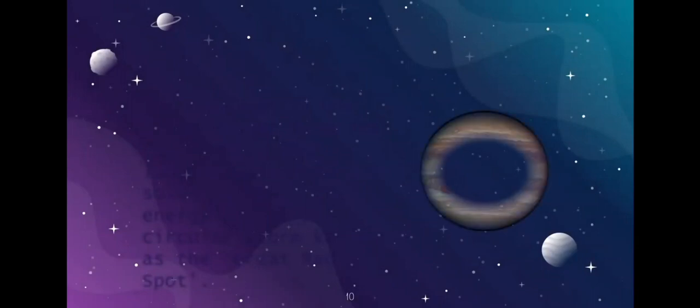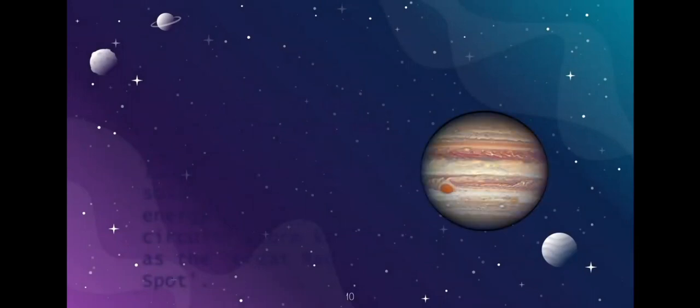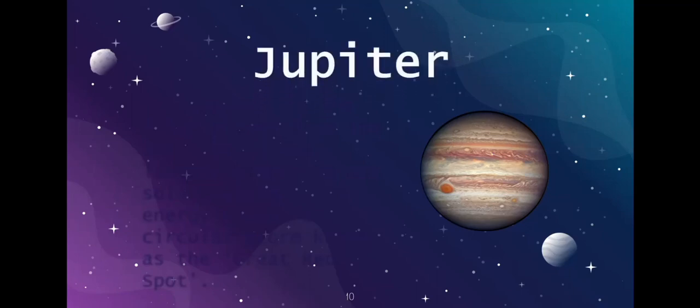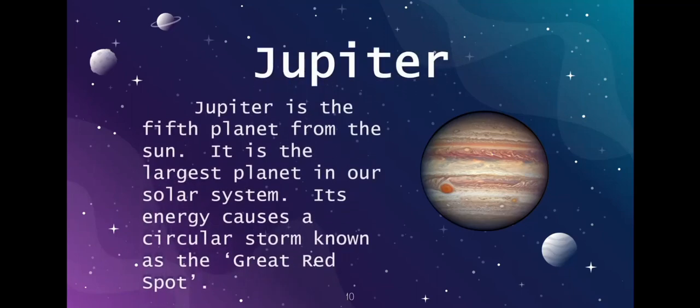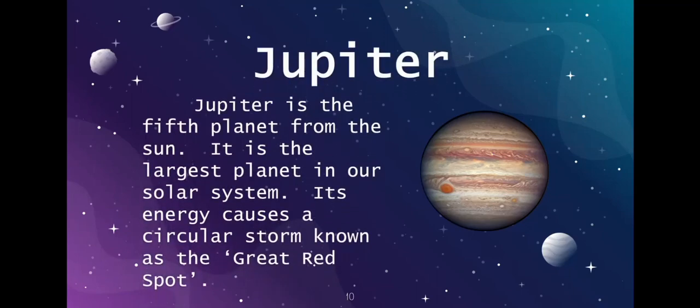Let's take a closer look at Jupiter. Jupiter is the fifth planet from the sun and the largest planet in our solar system. Its energy causes a circular storm known as the Great Red Spot. If you look closely at a picture of Jupiter, you can see the Great Red Spot on its surface.